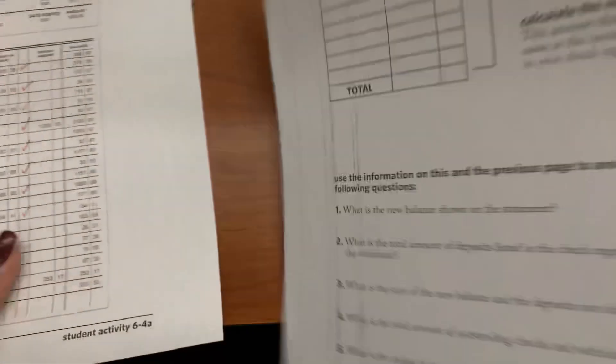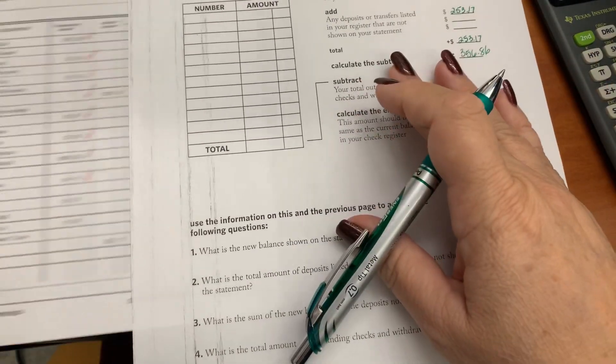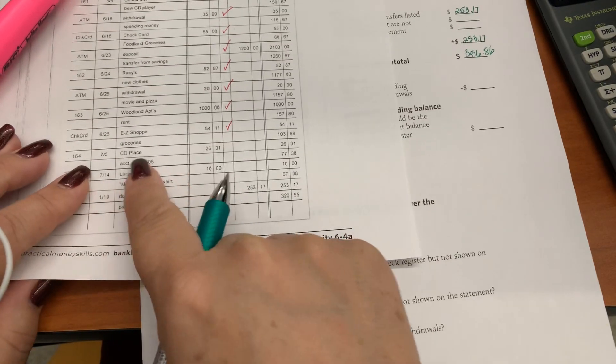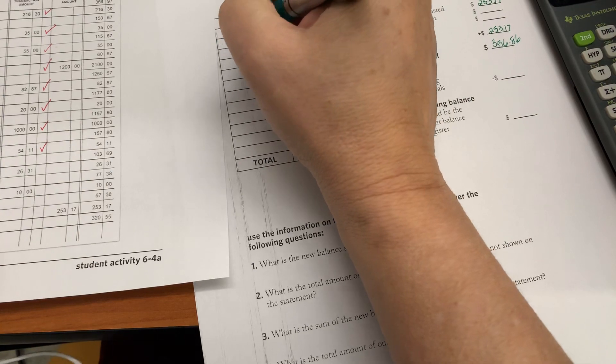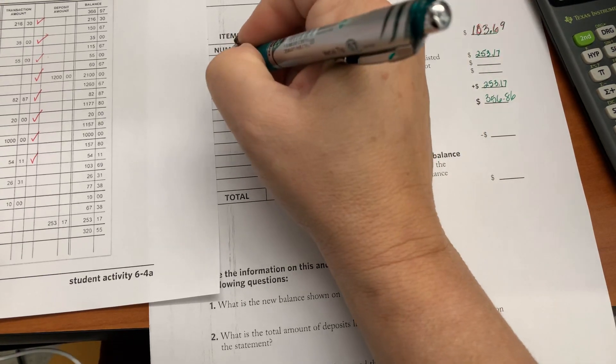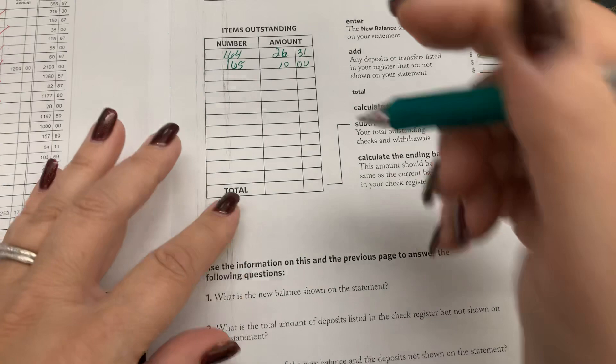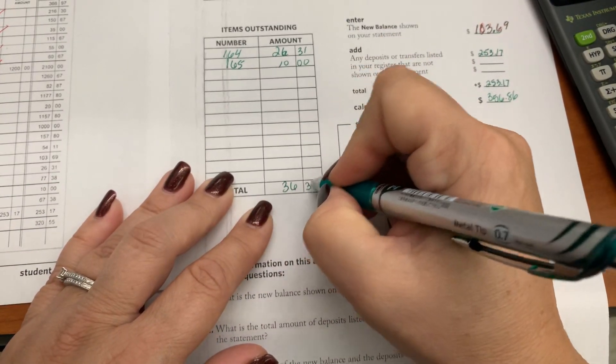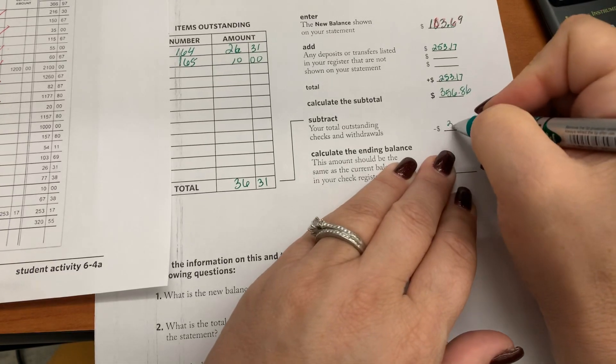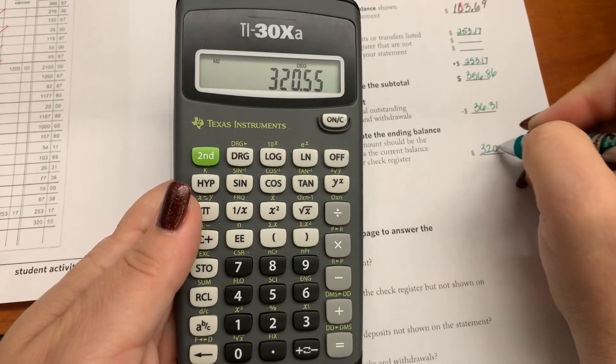Then I have to figure out which debits didn't go through, which are like my check numbers and my check cards and any checks that didn't go through yet. So looking here on my account I have check number 164 for $26.31, and then I have check number 165 for $10. So then I would find the total of those. That's going to give me $36.31. I write that over here and I subtract that. Then I take my $356.86 and I subtract my $36.31. That gives me $320.55.